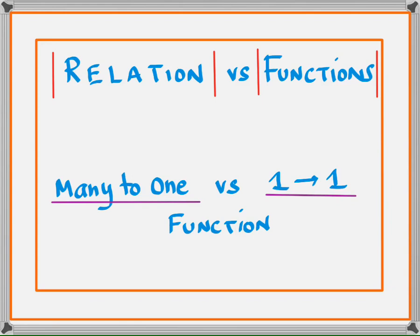A relation could be between any two variables, but for a function, a certain standard has to be fulfilled. A function is defined if there is one unique value in the range for each input. Domain means the input value — the x value. Range means the output value — the y value. So if you plug in different values of x and get one unique output for each, that is classified as a function.